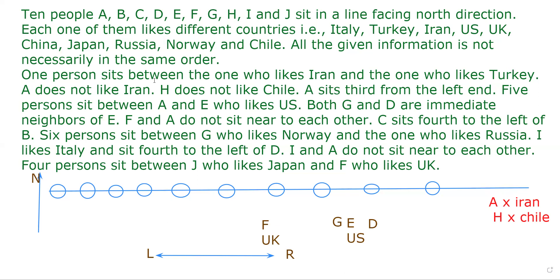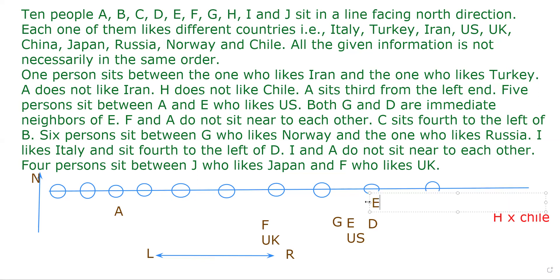A sits third from the left end. This side is the left side, so counting: one, two, three — this position is for A. Five persons sit between A and E, who likes US. Counting five positions: one, two, three, four, five — so this position is for E, who likes US.